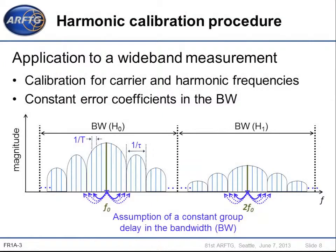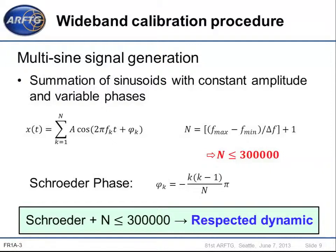This assumption will induce some errors in the time domain measured waveforms. To overcome this problem, we propose a wideband calibration procedure based on the use of a multi-sine signal generator and also a multi-sine amplitude and phase reference. To ensure that we respect the dynamic range of the system, we generate the multi-sine signal as a sum of sinusoids with constant amplitude and variable Schroeder phases. Considering these parameters, we are able to calibrate 300,000 frequency components over one or multiple frequency bandwidths — for example, a 10 kHz resolution is reachable over a 3 GHz bandwidth, or 100 kHz over a 30 GHz bandwidth.